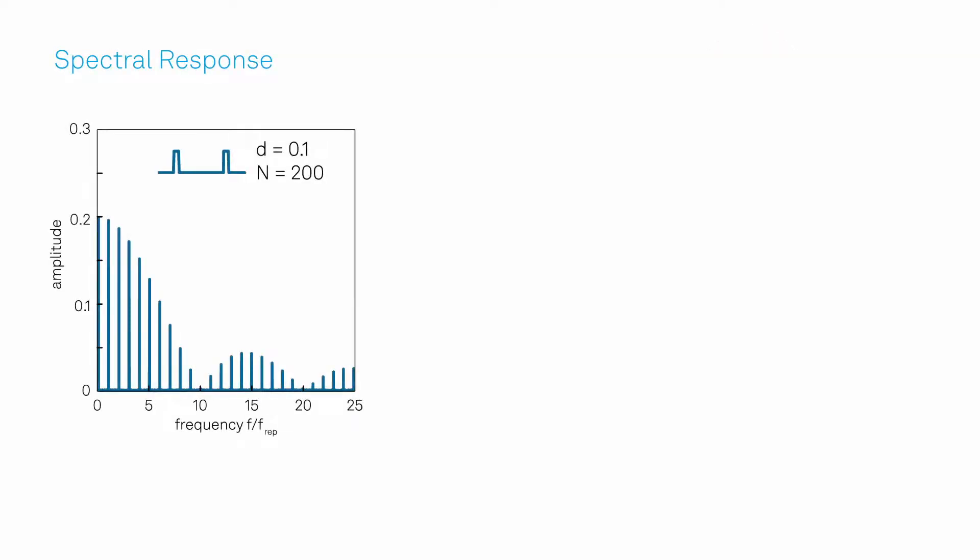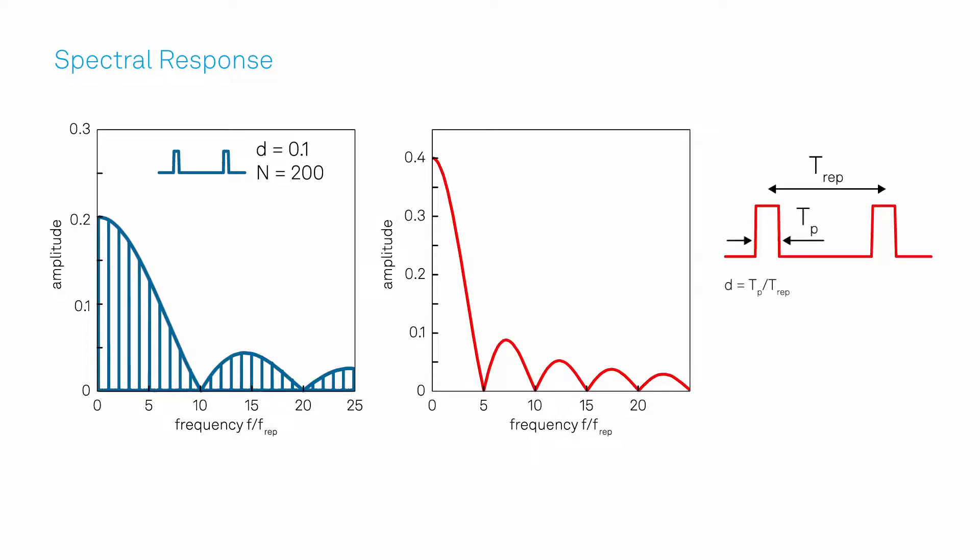The boxcar averager captures the signal on these frequencies and efficiently rejects other frequency components. The weighting of the individual terms is a sinc function. Its width is inversely proportional to the duty cycle.